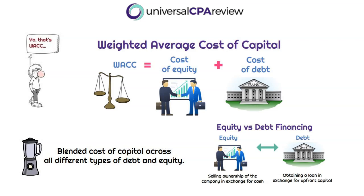So what can weighted average cost of capital tell us? It's going to be the blended cost of capital across all the different types of debt and equity. As you can see in the visual, it's just going to be the cost of equity plus the cost of debt. WACC is just those two components — equity and debt — added together to give us our weighted average.